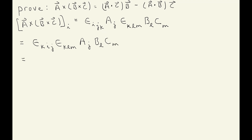Now we use the relationship between the product of two Levi-Civita symbols with one index contracted and the Kronecker deltas. This gives delta_il times delta_jm, minus delta_im times delta_jl. That is a very useful identity.